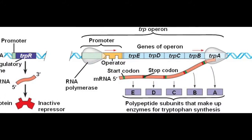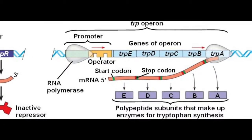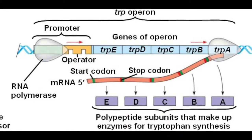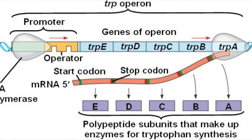An operon is a strand of genomic DNA regulated by a single promoter. It can be more simply defined as a cluster of genes which are transcribed into an mRNA strand. Its existence was first discovered by Jacques Monod in 1953. It had been previously thought to only be present in prokaryotic cells, but recently research has shown it to exist in eukaryotic cells as well.